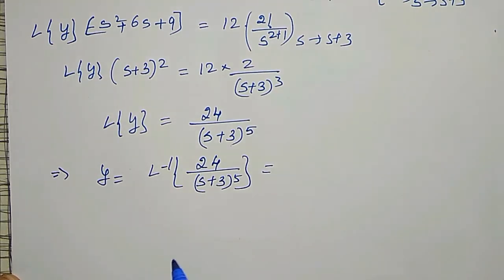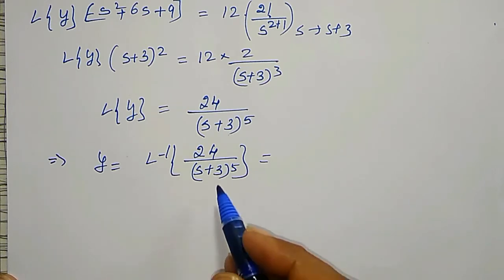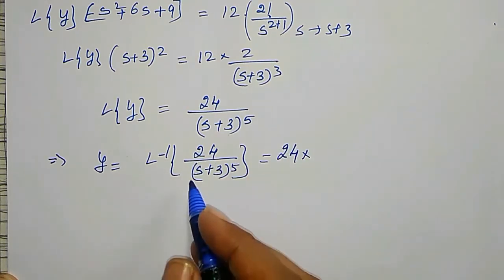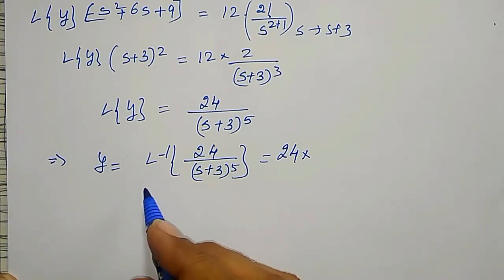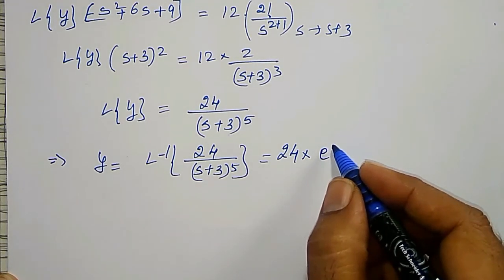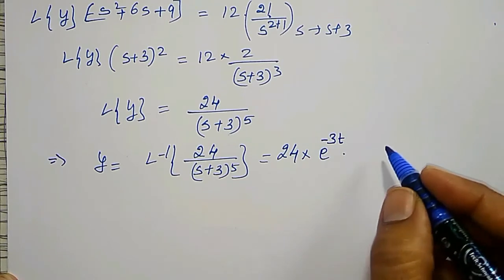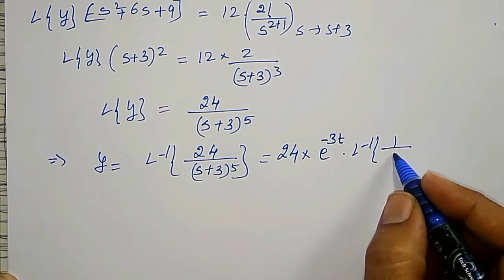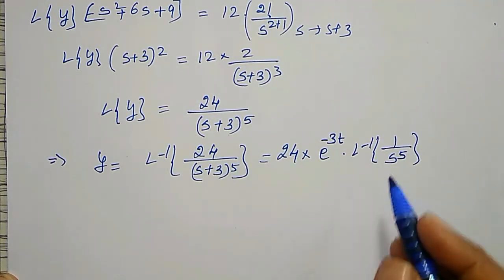To find y, I take the inverse Laplace Transform of 24 divided by (s+3)^5. Writing 24 outside and applying the shifting property, this becomes e^(−3t) multiplied by the inverse Laplace Transform of 1 divided by s^5, where s+3 is replaced by s.